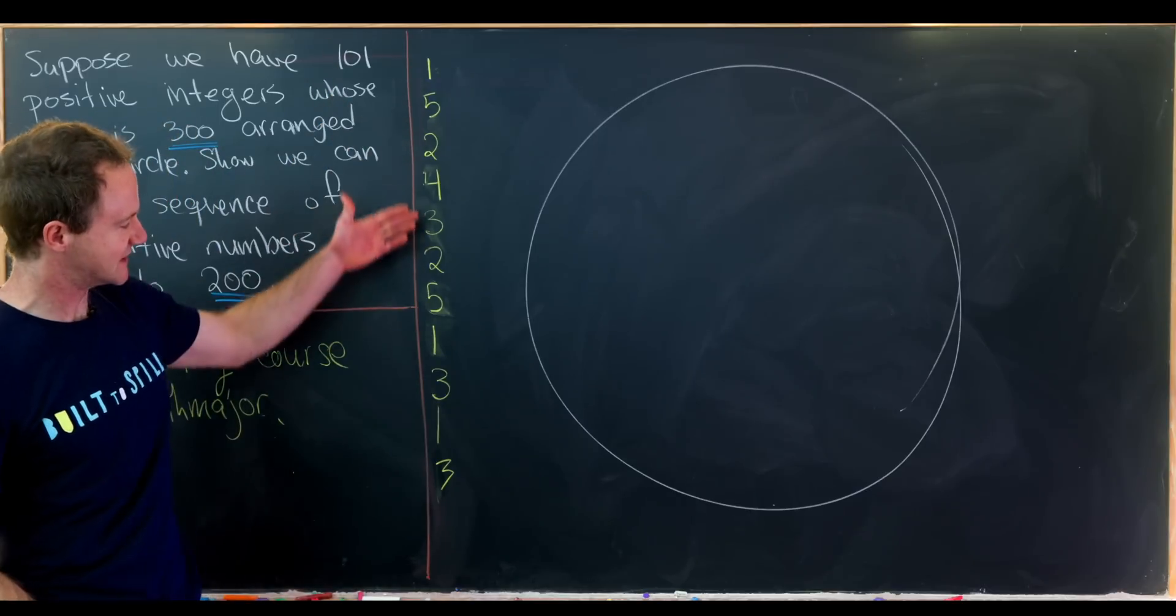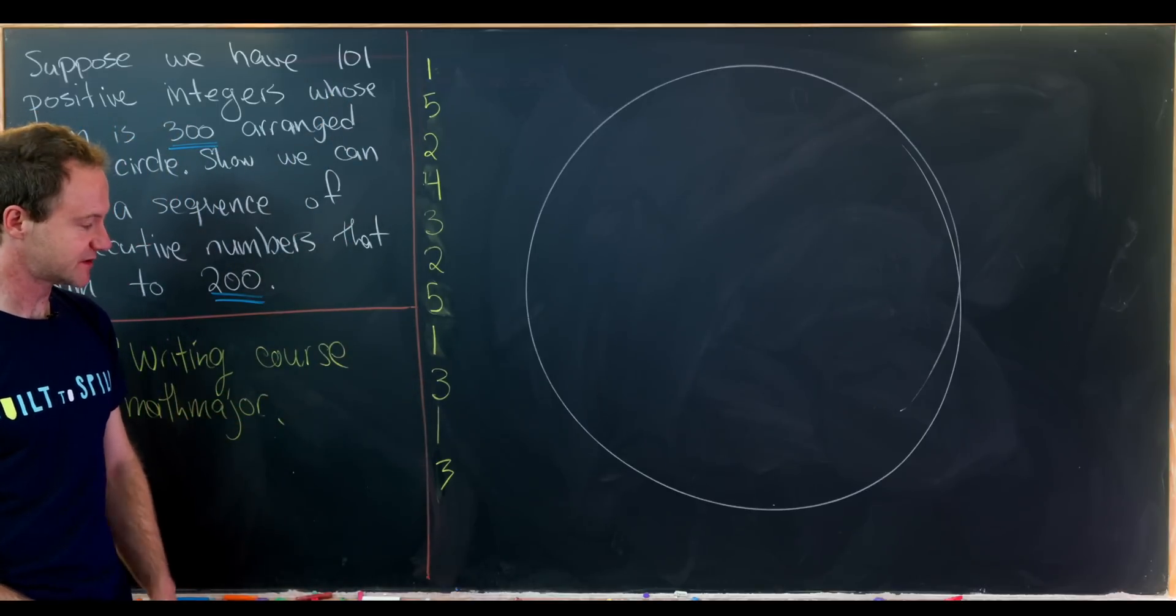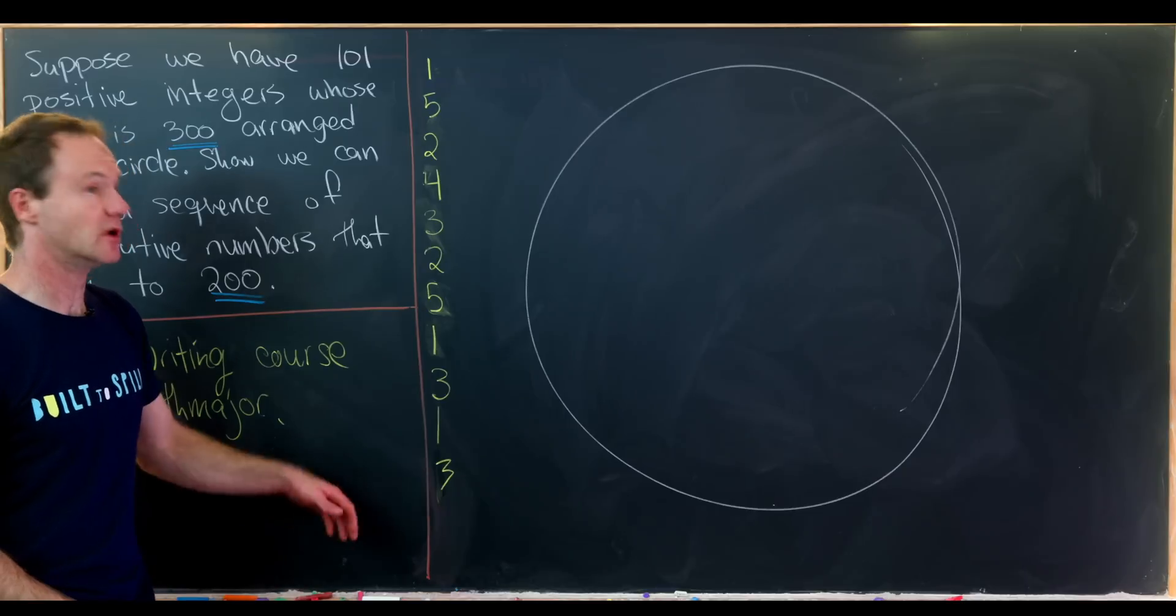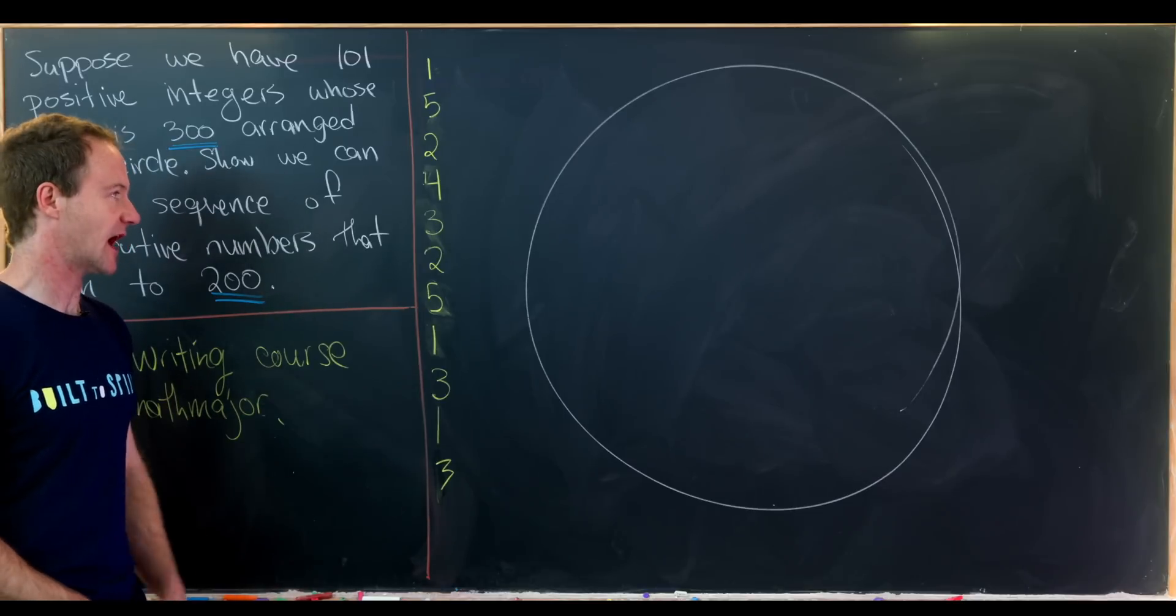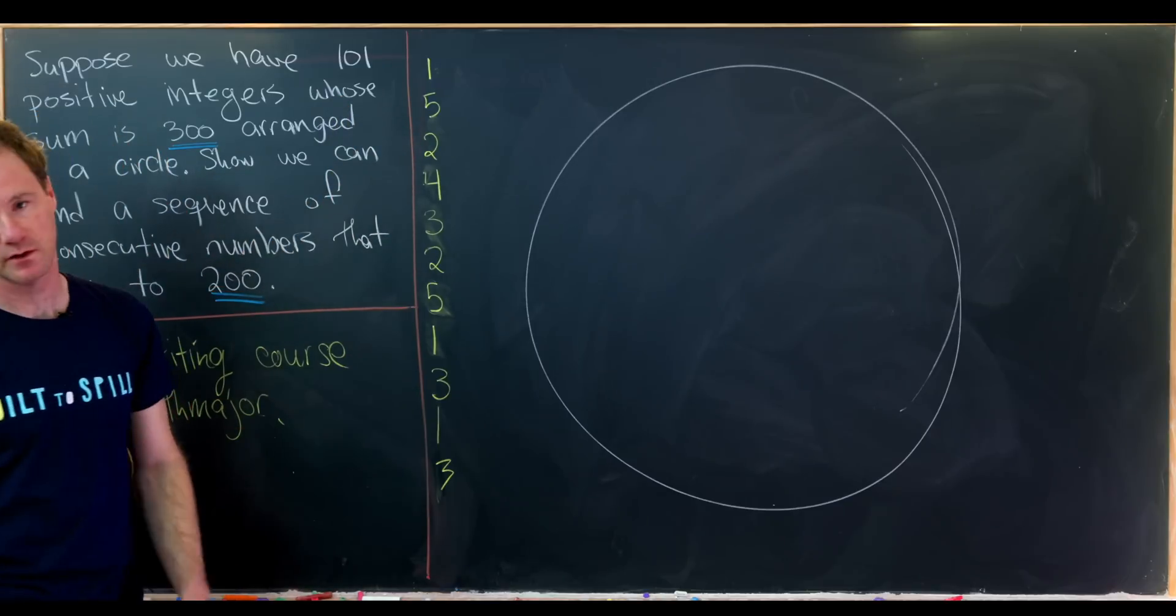So here what I have is a list of 11 numbers that add up to 30. So you can check they add up to 30. We have 1, 5, 2, 4, so on and so forth.